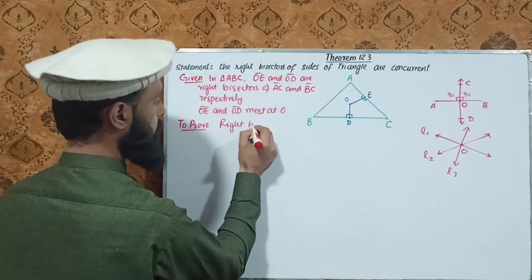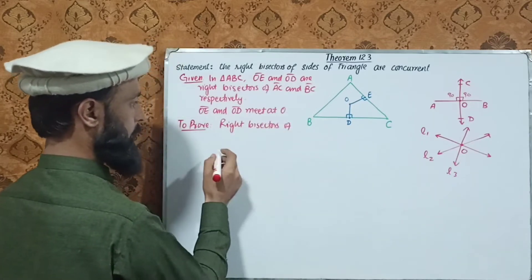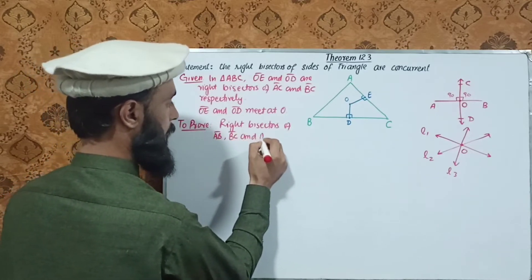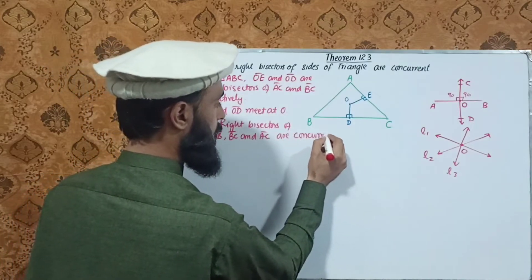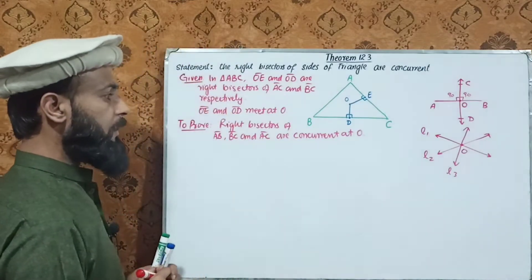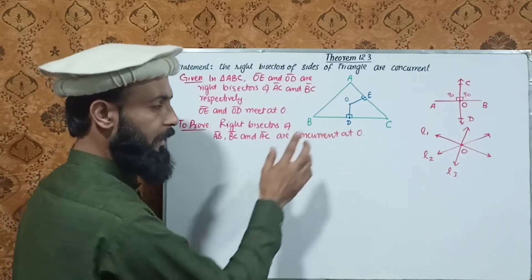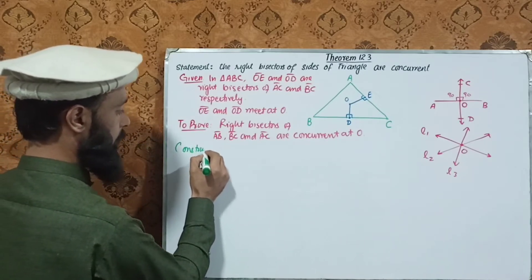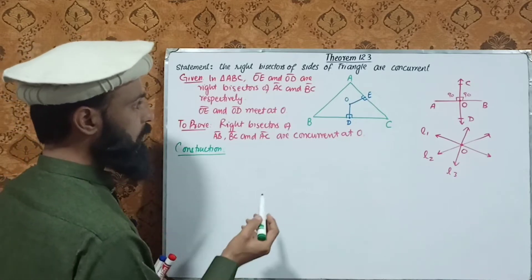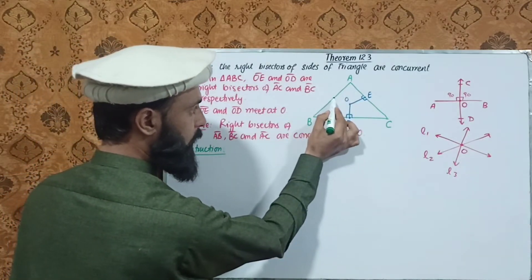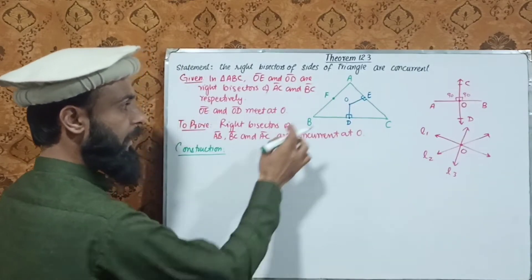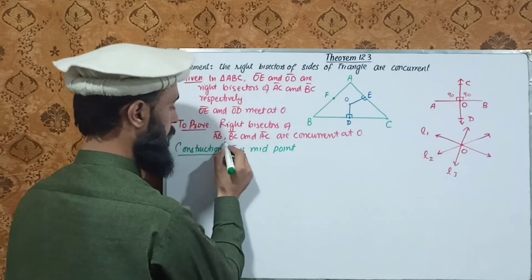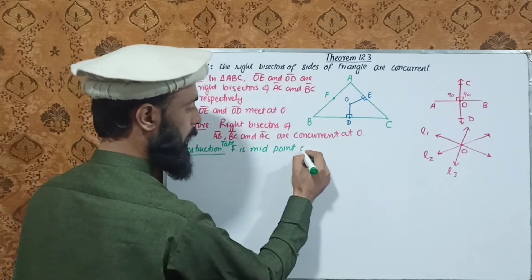To prove: right bisectors of sides AB, BC, and AC are concurrent at O. Let F be the midpoint of AB. OE is the right bisector of AC, OD is the right bisector of BC, and OF is the right bisector of AB. We are given that F is the midpoint of AB.